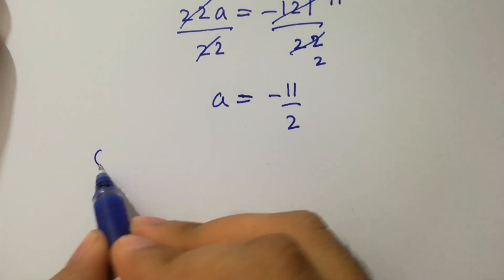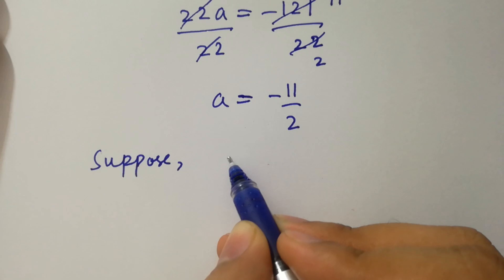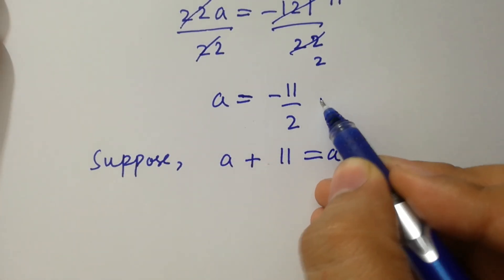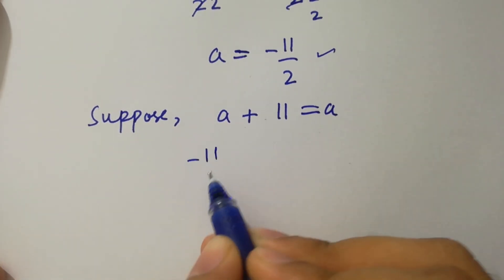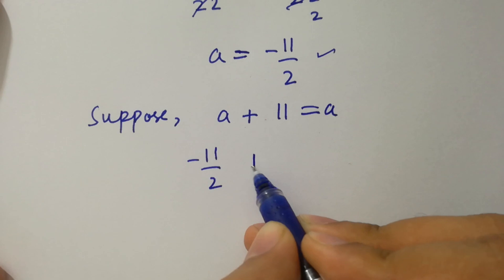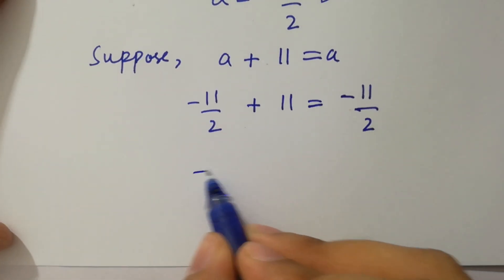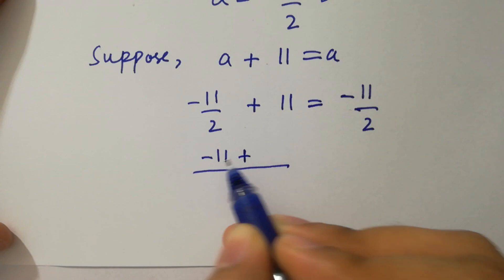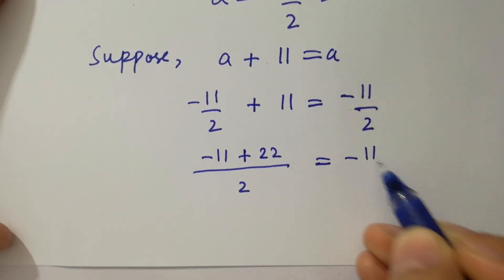Suppose a plus 11 equal to a. Put the value of a: minus 11 over 2 plus 11 equal to minus 11 over 2. Take LCM. We have minus 11 plus 11 times 2 is 22 equal to minus 11 over 2.